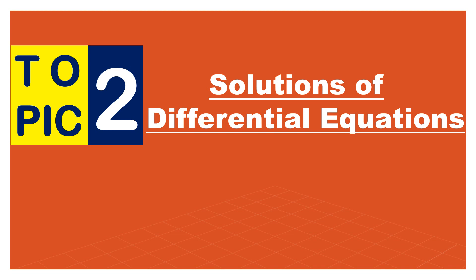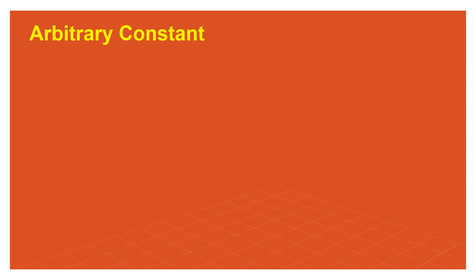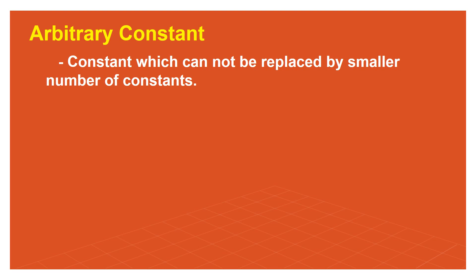Again, topic number one, we discussed several definitions of terms. Before we start solving problems, we need to define some terms that we will use in our discussion. First, we will discuss what we mean by arbitrary constants. An arbitrary constant is a constant which cannot be replaced by a smaller number of constants — it is also known as an essential constant.